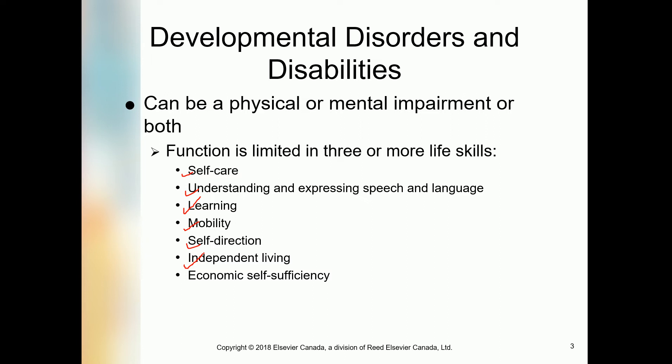Economic self-sufficiency is very difficult for a person with a developmental disorder or disability, because the person may not have learned anything and cannot earn money independently. The government may provide a certain amount of money, but it is not sufficient. That's why self-sufficiency is very difficult and the person is always depending on others.